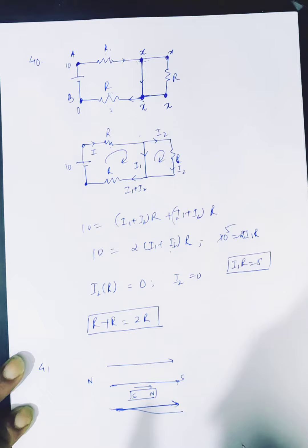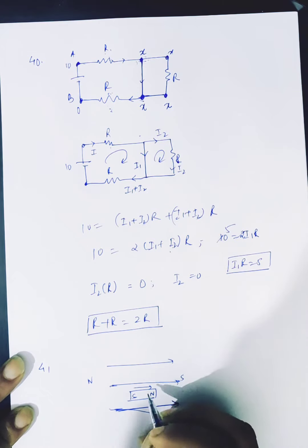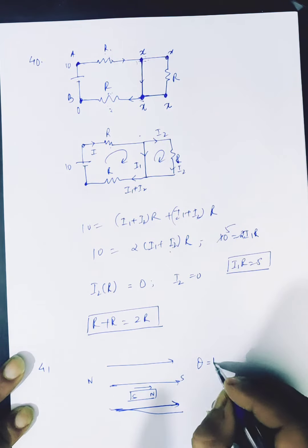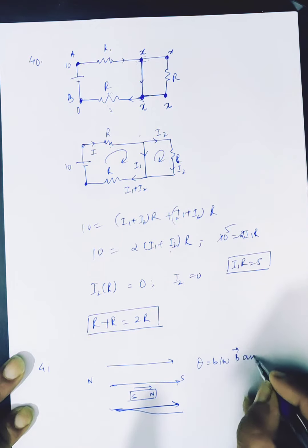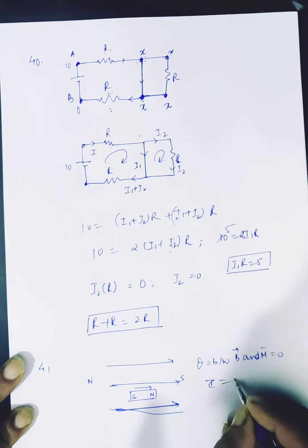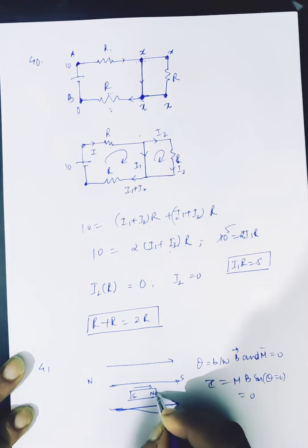Now you can see that parallel, theta between B and M is 0. And because you know torque equals MB sin theta, theta is 0, the torque is 0.